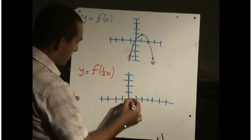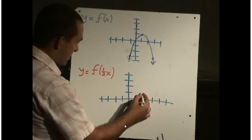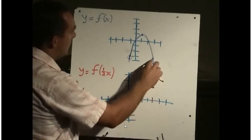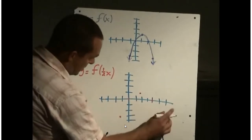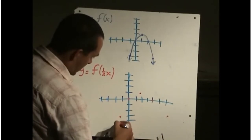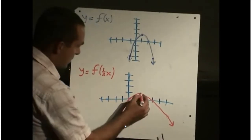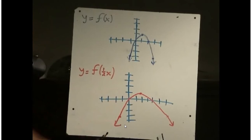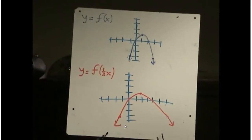The x value of 0 multiplied by 2 stays at 0, so that point doesn't change. The x value of 1 doubled becomes 2. The x value of 2 doubled becomes 4. The x value of 3 doubled becomes 6, with a y value of negative 3. Now I connect the dots. The graph of y equals f of one-half x is the same as y equals f of x except all x values are twice as large. That's horizontal expansions and compressions.